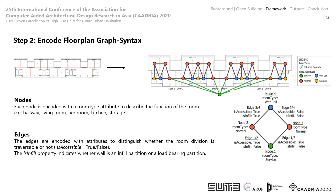With the support and infill elements identified, the floor plan is encoded into a graph syntax. Spaces are annotated as nodes with different room type attributes to specify their functions. The generic attributes in this case are hallway, wet cells, normal space, and storage. The adjacent nodes are linked to each other via edges. The edges have two attributes: the isAccessible attribute and the isInfill attribute. If the wall dividing the spaces is an infill element, the isInfill attribute is labelled as true. The isAccessible attribute is a flag that the algorithm will toggle to generate and test different permutations of the floor plan to attempt to satisfy user demands.